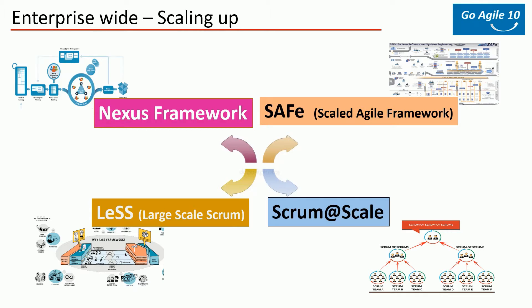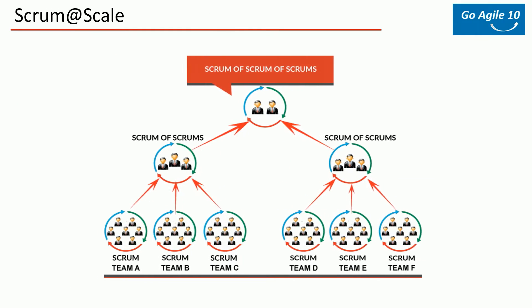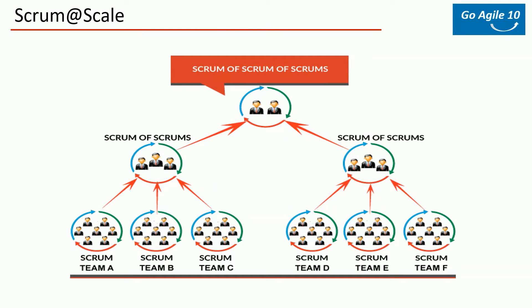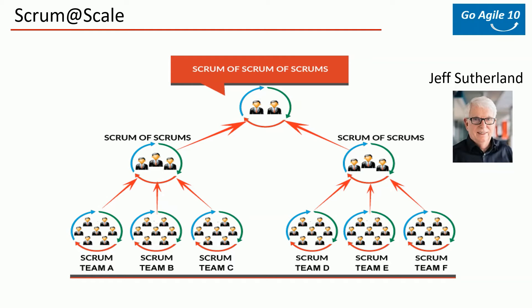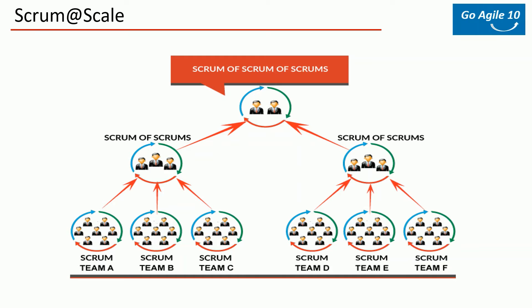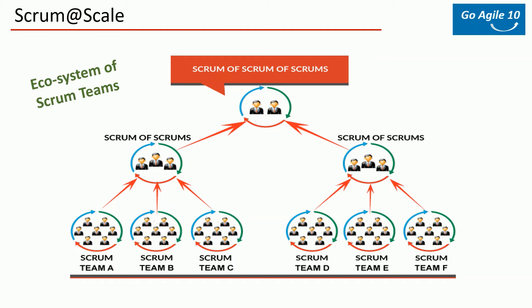Scrum at Scale is a logical extension to the scrum framework. It provides a structure to grow scrum teams organically, customizing to your specific organizational needs. Dr. Jeff Sutherland, the co-creator of Scrum, created this Scrum at Scale framework. While scrum enables delivery by a single team, Scrum at Scale efficiently coordinates an ecosystem of scrum teams through a minimum viable bureaucracy and a scale-free architecture.